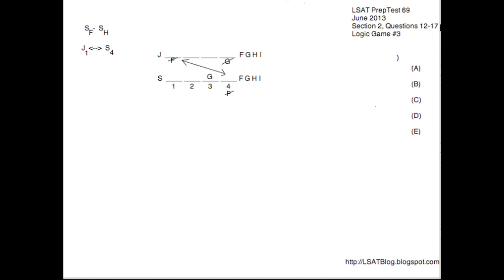Always use the time element, the chronological element, as your base here. We have two different things being delivered each week: juices and snacks. The four schools themselves are our variables that we're placing onto each of the four weeks, because juices happen every week and snacks happen every week, but the schools themselves are not happening every week — there are some weeks where F gets a delivery and some weeks where F does not.